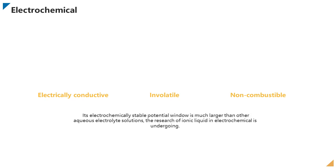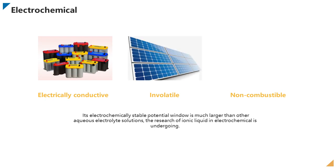Since the ionic liquid is electrically conductive, involatile, noncombustible, and its electrochemically stable potential window is much larger than other aqueous electrolyte solutions, the research of ionic liquid in electrochemistry is undergoing. In molten salts, ionic liquids have been used as electrolytes in the manufacture of new high-performance batteries, solar cells, and capacitors.